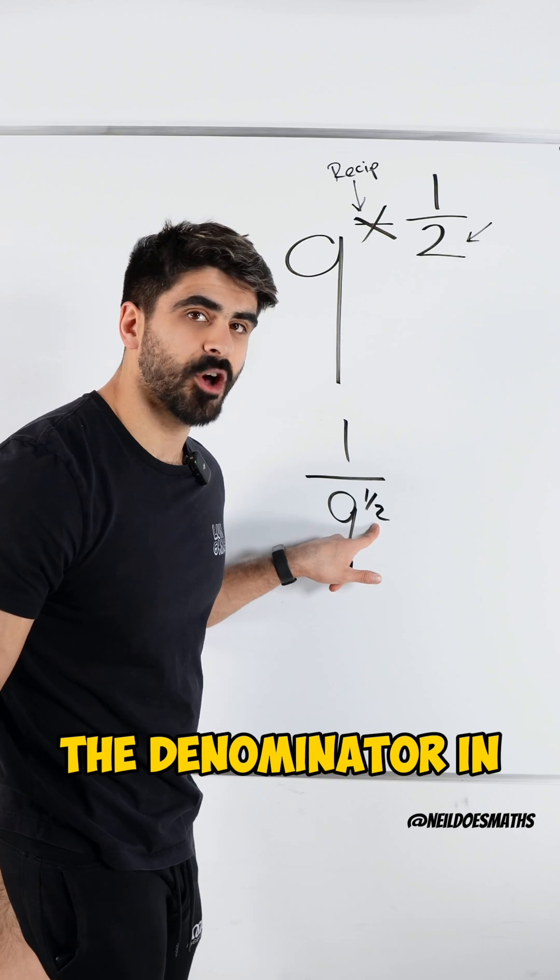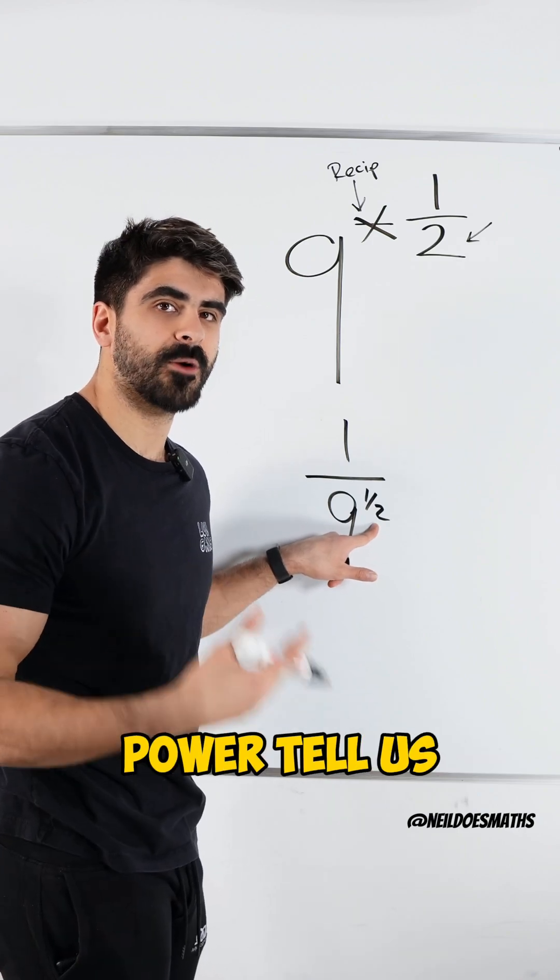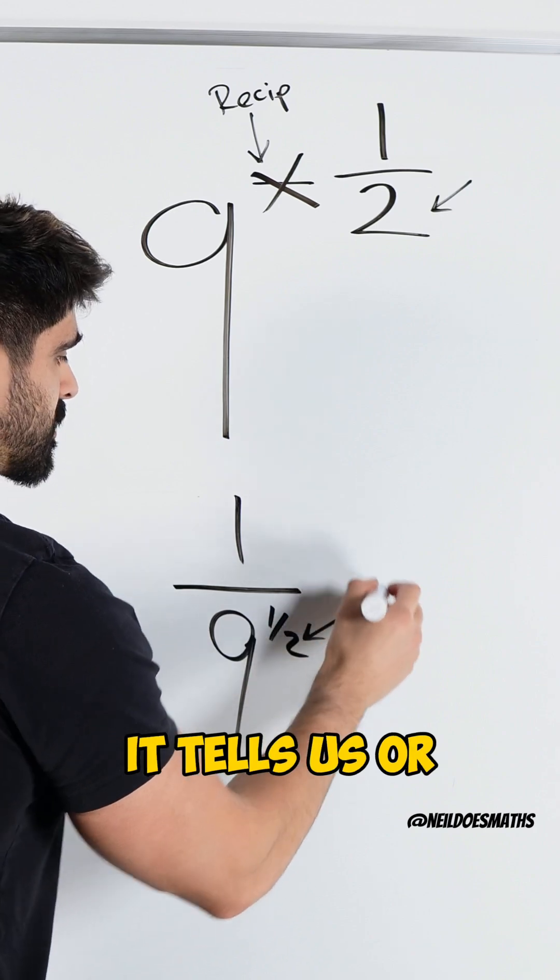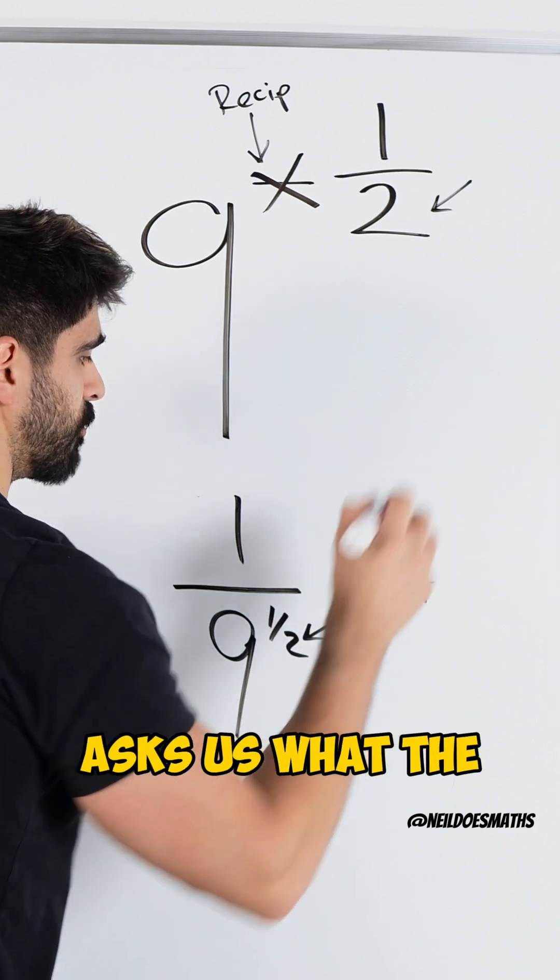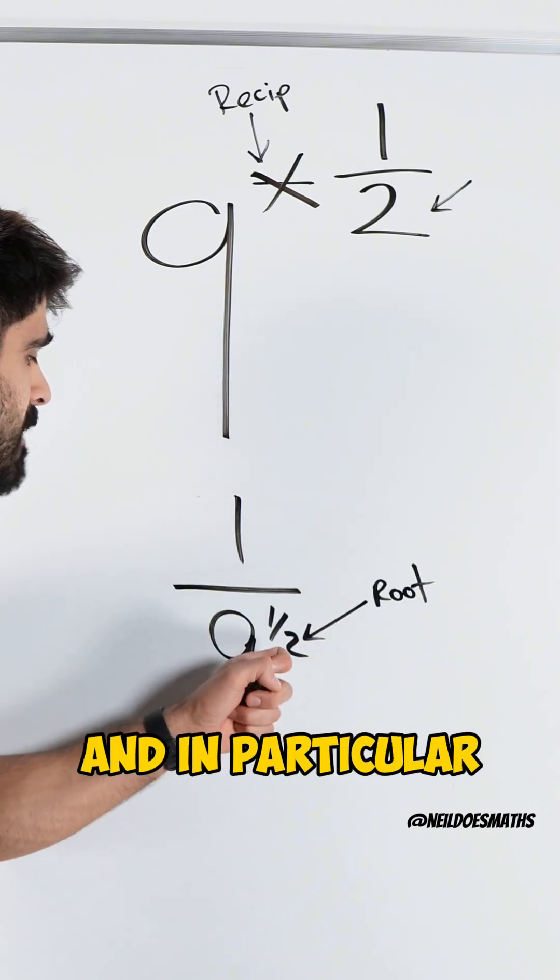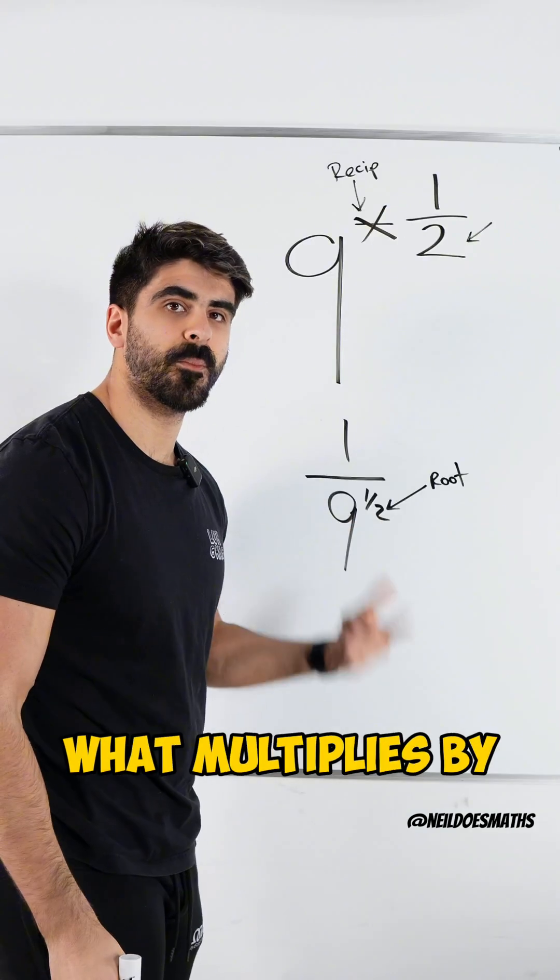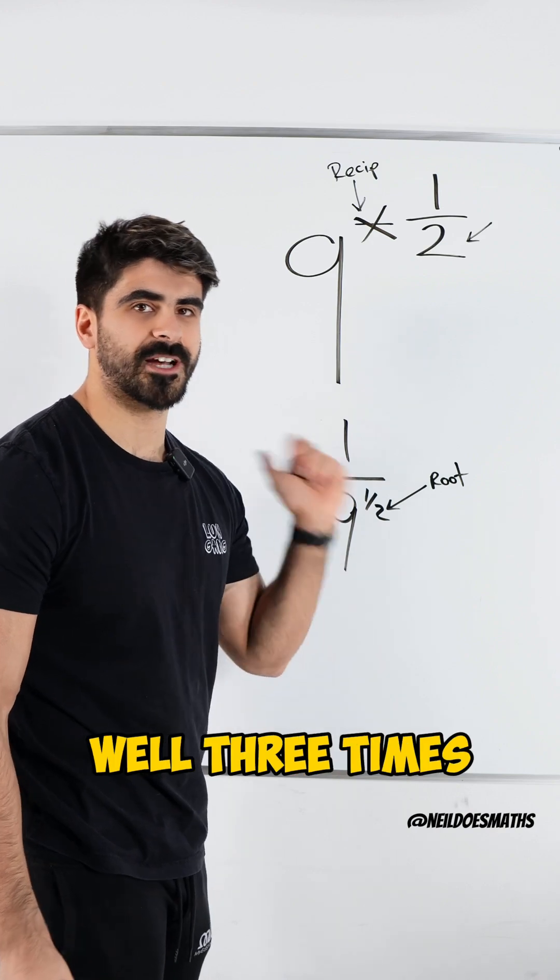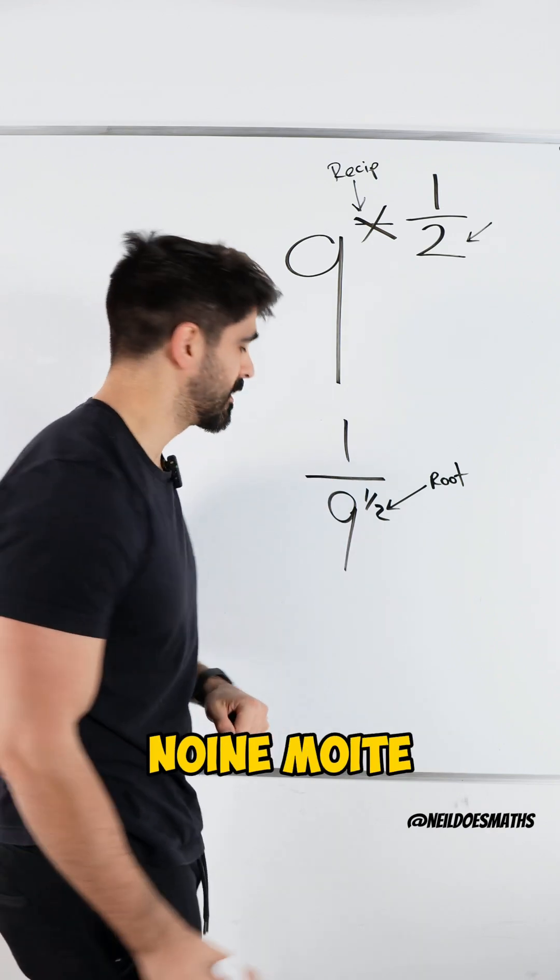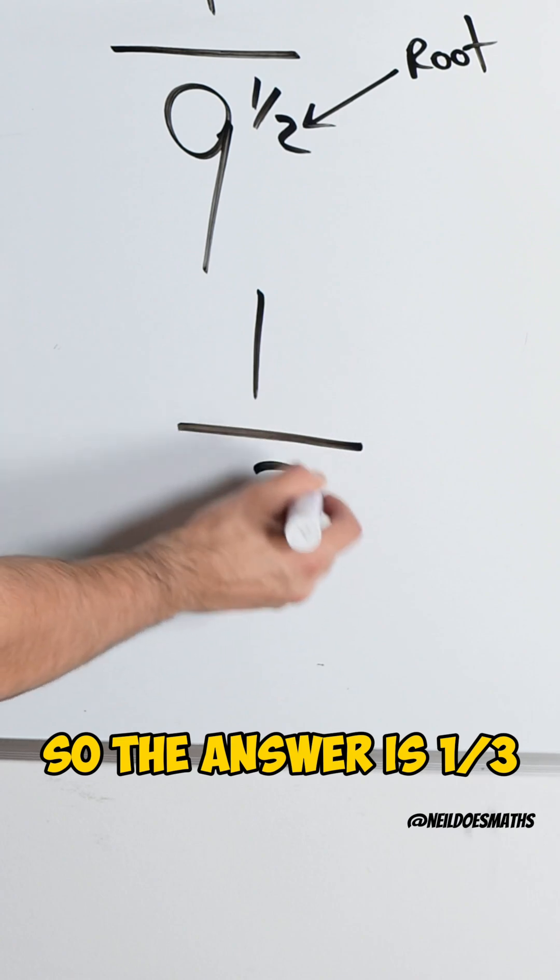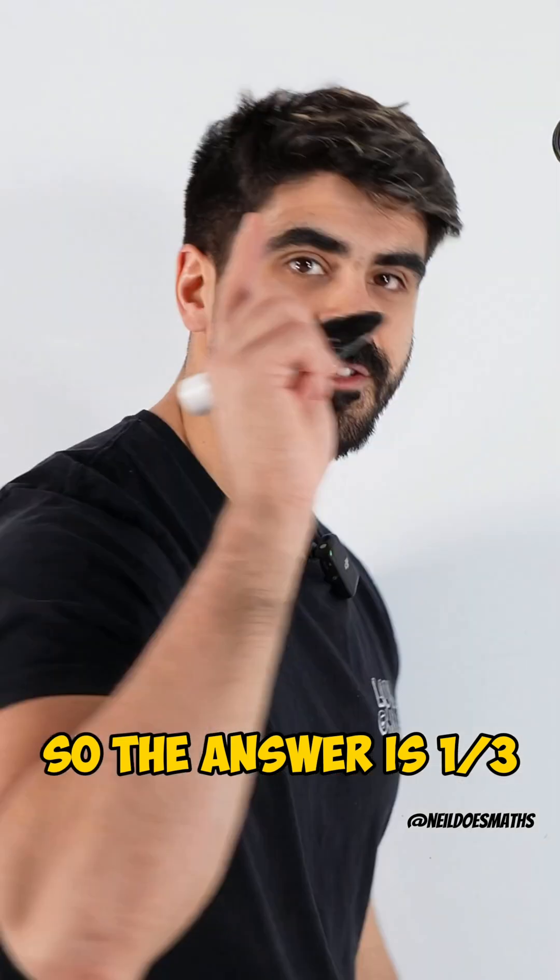Now, what does the denominator in the fractional power tell us? It tells us or asks us what the root is of that number, and in particular the second root. What multiplies by itself to give you 9? Well, 3 times 3 gives you 9. So the answer is 1 third.